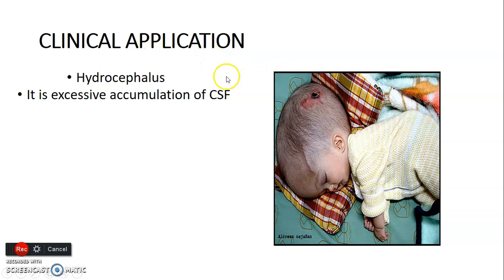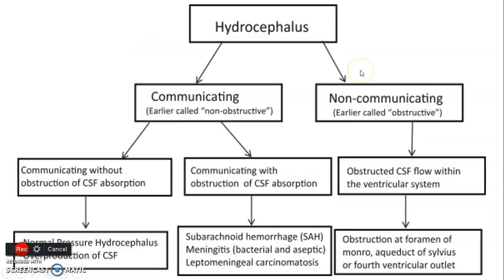What is the clinical application of CSF flow? We have hydrocephalus — excessive accumulation of CSF causing head enlargement. There are two types: communicating and non-communicating. Communicating means all the ventricles are communicating with no obstruction from lateral to fourth ventricle — also called non-obstructive. Non-communicating means there is an obstruction somewhere so all four ventricles are not communicating — also called obstructive hydrocephalus.